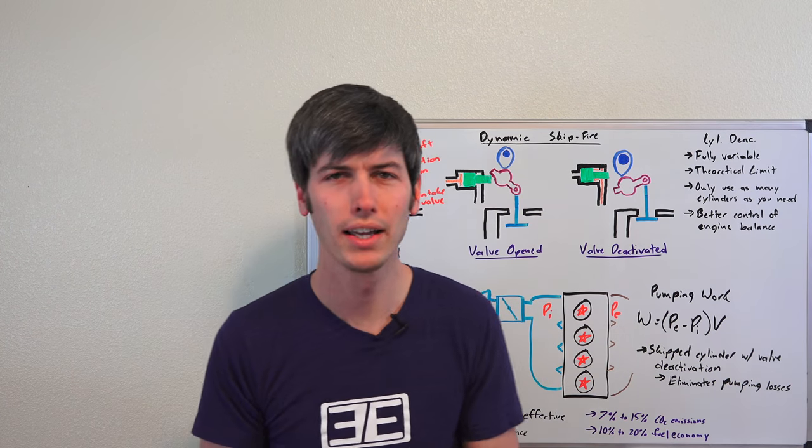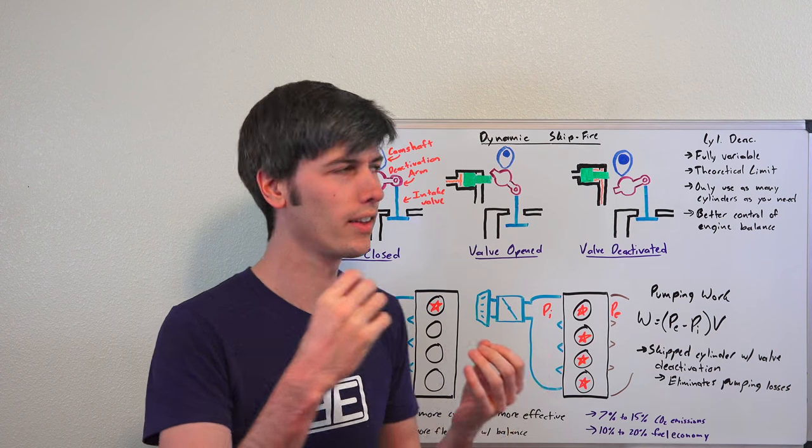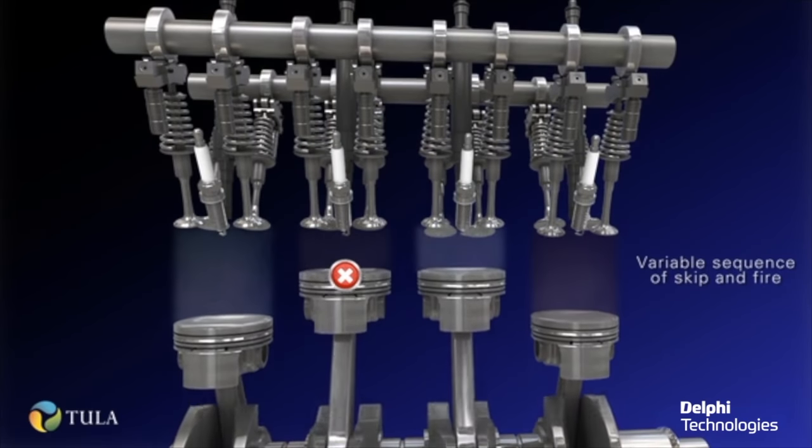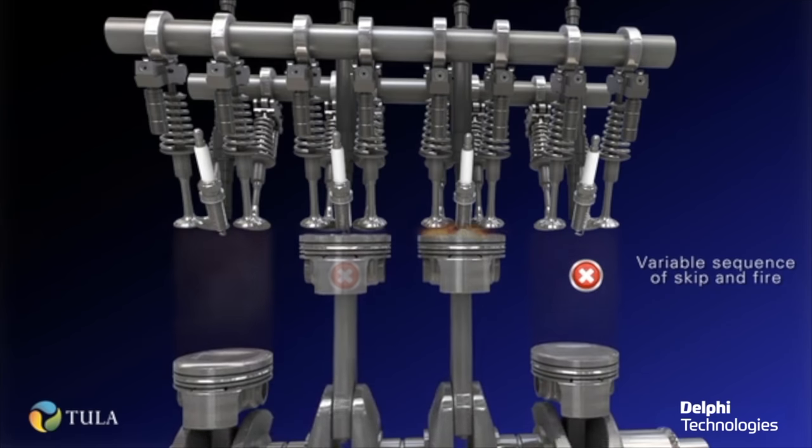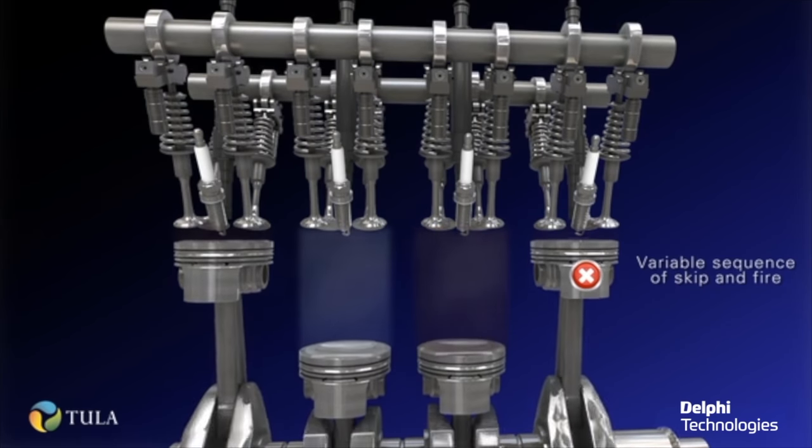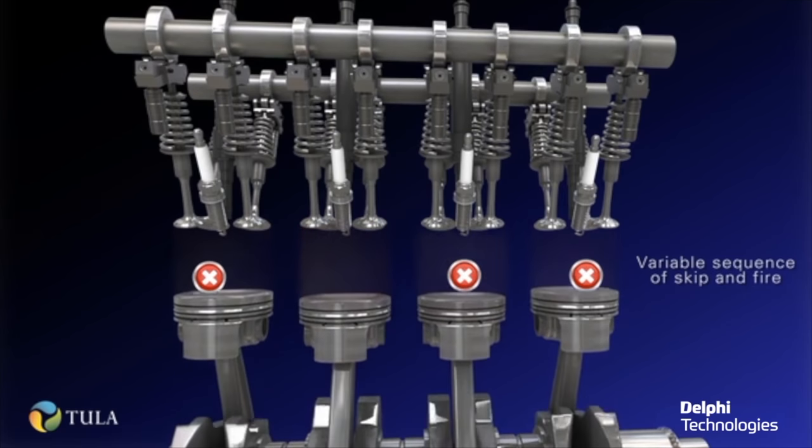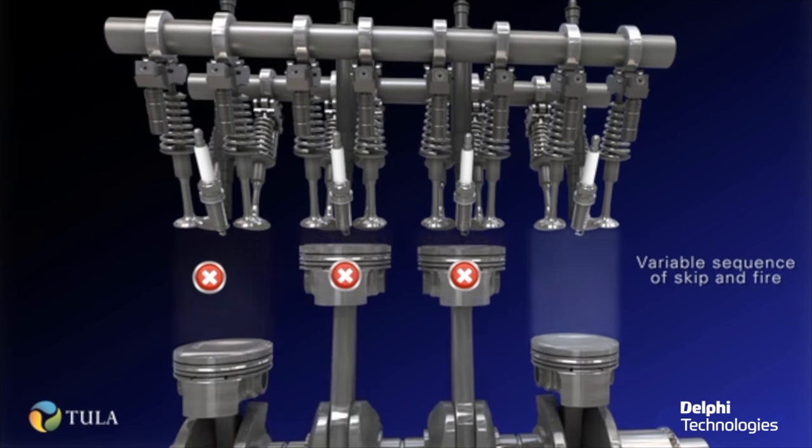And again, this can be done in any combination with any of the cylinders that you have. You only use as many cylinders as you need. So if you're cruising down the highway, and you really only need the power from two cylinders, you only use two cylinders. And also because this can dynamically change which cylinder is firing, it can actually choose an order of firing that makes sense in order for the engine to be well balanced. So versus traditional cylinder deactivation control methods, where you may just use four cylinders or eight cylinders, this is actually going to provide you better balance and better fuel efficiency.